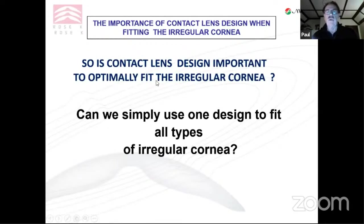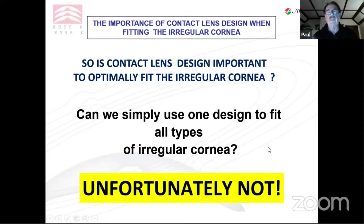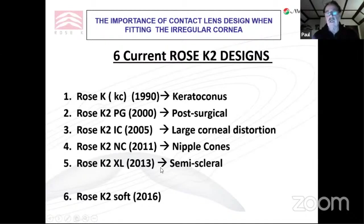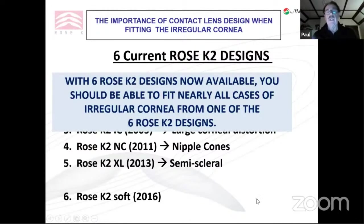Is contact lens design really important to fit the irregular cornea? Can we simply use just one design? I don't believe we can. You can't take one design and put it on any shape of irregular cornea. Since I started designing for keratoconus back in 1990, I initially thought one design would fit most irregular corneas — but I soon found it didn't fit grafts well, didn't fit PMD or pellucid well, and was not good for oblate corneas. So I subsequently came up with different designs for different conditions. Now I have six different designs — five rigid and one soft — and believe you can fit the irregular cornea with one of these six.